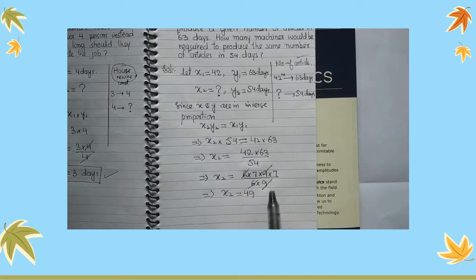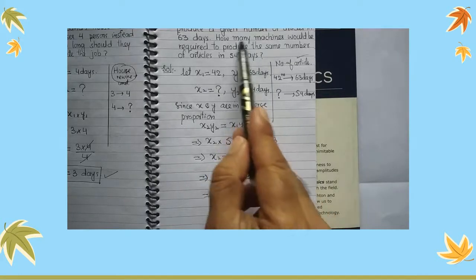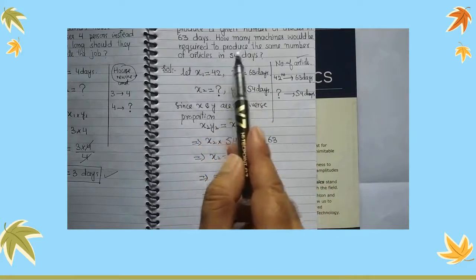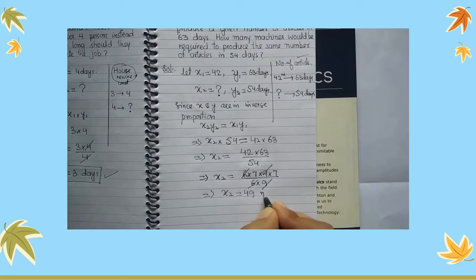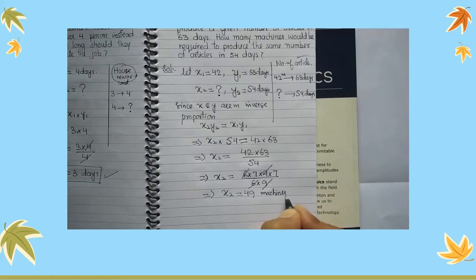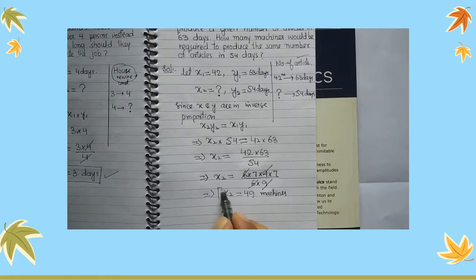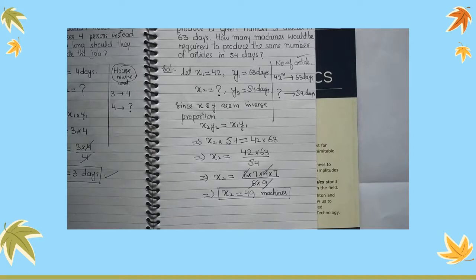And what was x2? How many machines would be required to produce the same number of articles? So this is number of machines. That means under given conditions, 49 machines would be required to produce the given number of articles in 54 days.